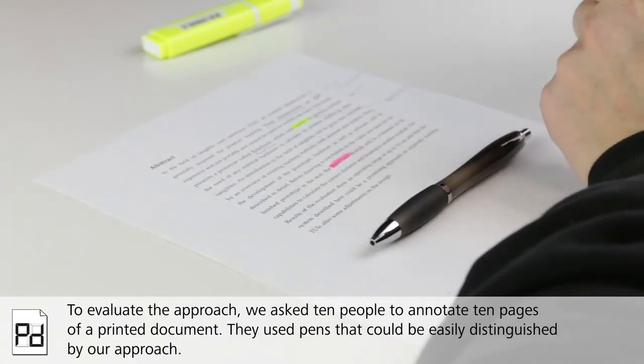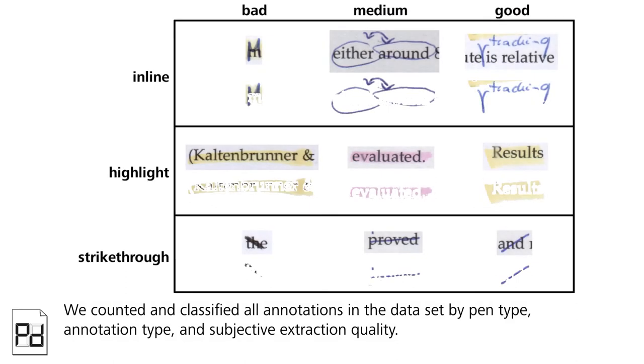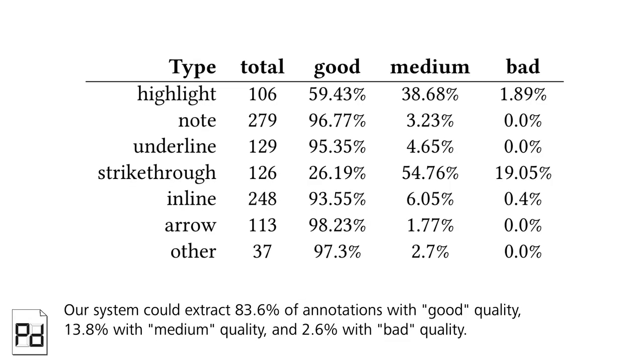We counted and classified all annotations in the dataset by pen type, annotation type, and subjective extraction quality. Our system could extract 83.6% of the annotations with good quality, 13.8% of medium quality, and 2.6% with bad quality.